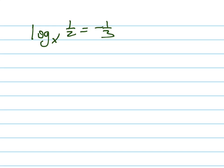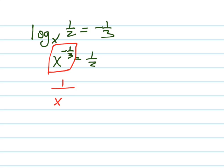Let's solve this logarithmic equation. We're going to first rewrite this in exponential form, so x to the negative one-third equals one-half. Now let's use our properties of exponents to write this as one over x to the one-third, because that's what a negative power is.